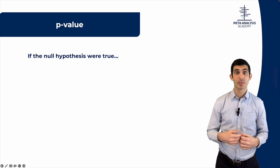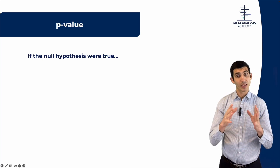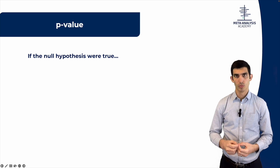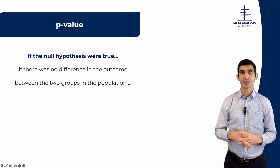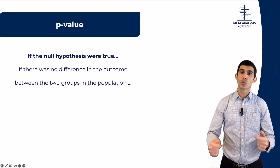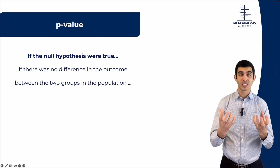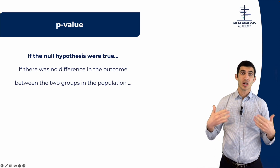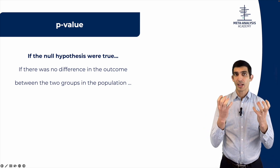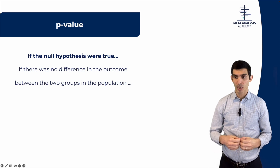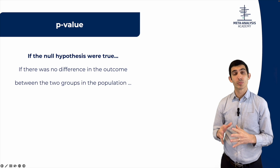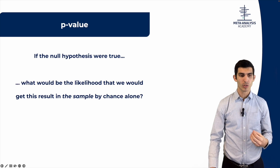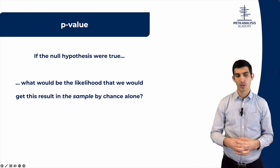With that in mind, let's talk about what is a P-Value. I'm going to give you the technical definition first and then give you an example. The P-Value says the following: if the null hypothesis were true — and let's remember what the null hypothesis is — the null hypothesis is that there is no difference in the outcome between two groups in the target population. So if you're comparing a new drug versus placebo in patients with diabetes, then the null hypothesis would be that in the target population of all patients with diabetes, this new drug and placebo have no difference between each other in terms of outcomes.